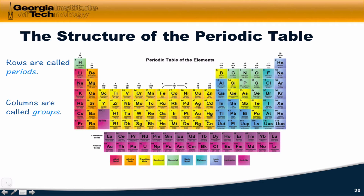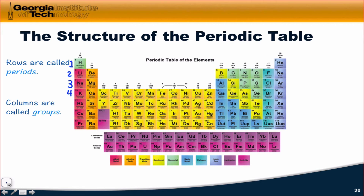One thing to notice about the periods is that they actually have different lengths. The first period only consists of two elements. The second and third have eight each — there's that number eight coming in again. The fourth period has 18 elements, the fifth has 18 as well, and we actually get 32 elements across the sixth and seventh periods, with the addition of the lanthanides and the actinides.